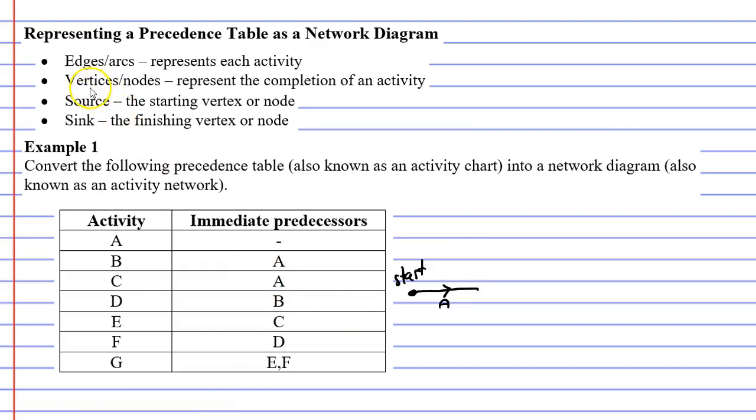When we look above, it says that vertices, also known as nodes, represent the completion of an activity. So to show that activity A has completed, we need to finish it with a vertex.